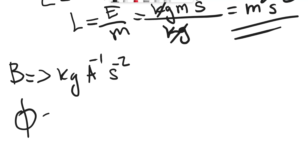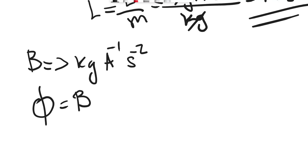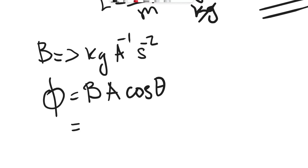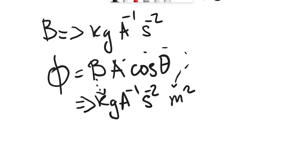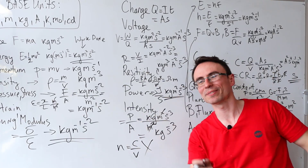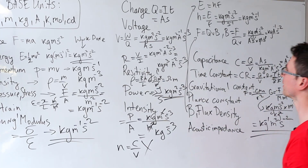Magnetic flux is defined as B A cos θ, and flux linkage is N B A cos θ where N is the number of turns. Both have the same base unit. B is kg A⁻¹ s⁻², area is m², and cos θ has no unit, so the base unit is kg A⁻¹ s⁻² m².